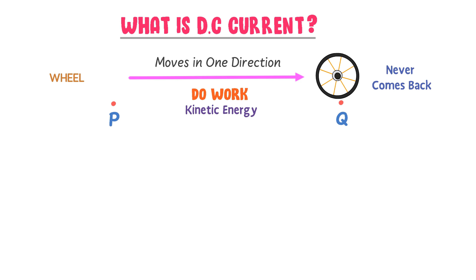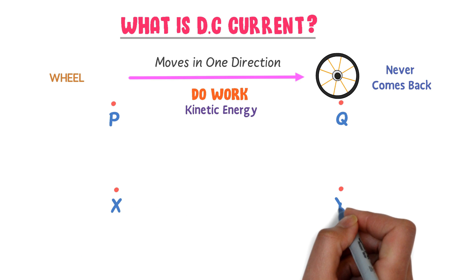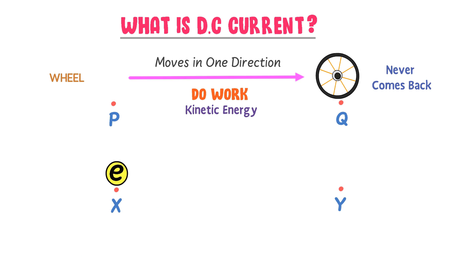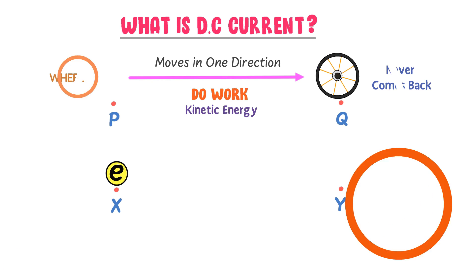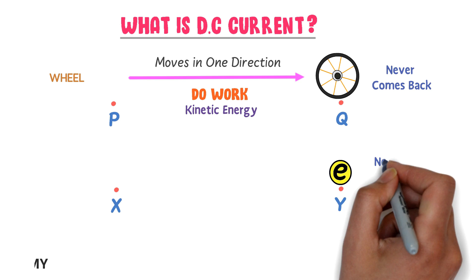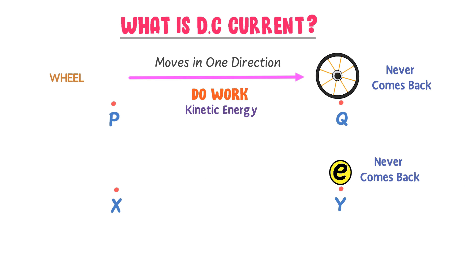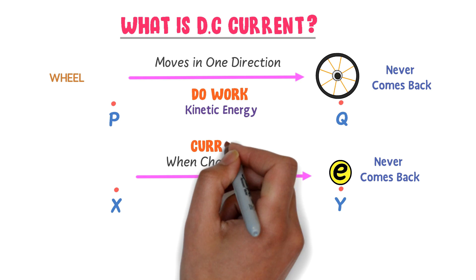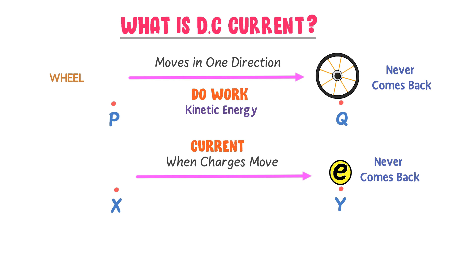Now consider two other points, X and Y. Let an electron be present at point X. It then moves from point X to point Y and never comes back. We have learned in our previous lectures that when charges move, this phenomenon is called current. When this electron, being a charged particle, moves from point X to point Y, there is current between point X and point Y.